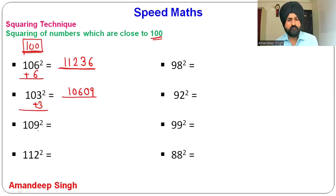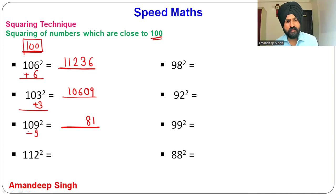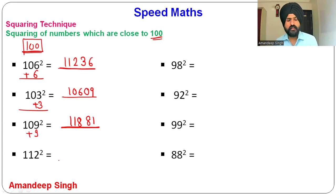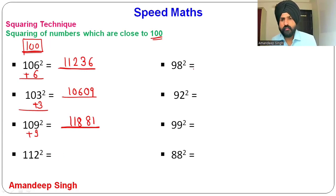For 109²: it is 9 more than 100. 9² = 81, write 81. 109 + 9 = 118. So 109² = 11881.